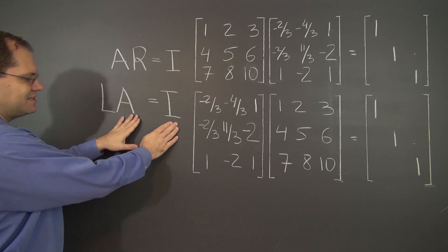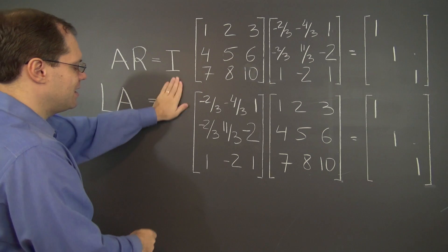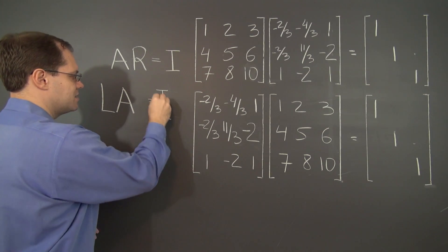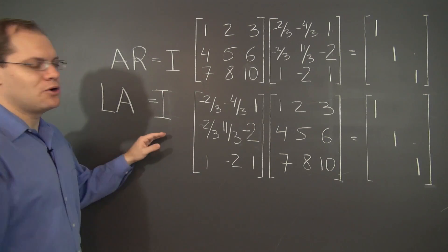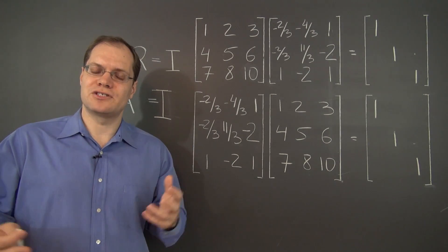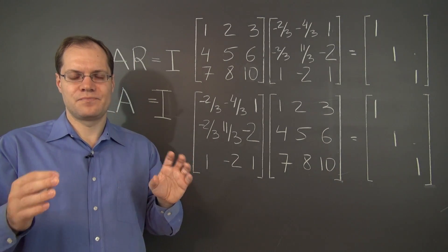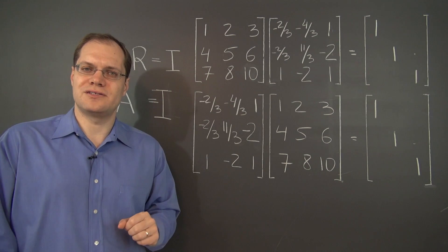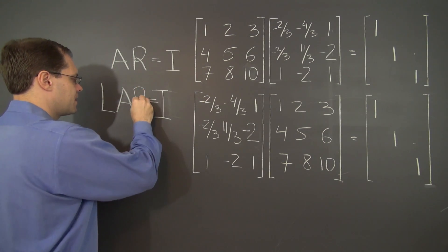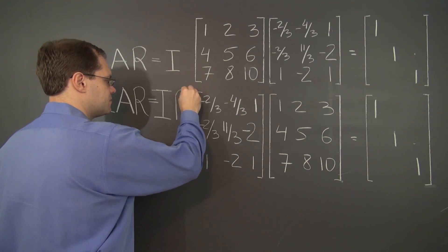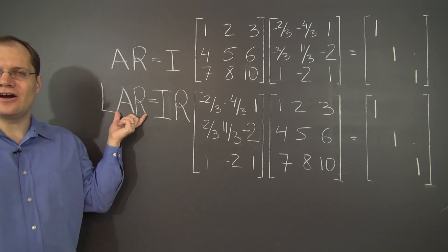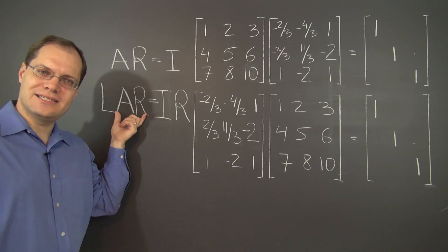So what I'm going to do is take this identity and multiply both sides. I'm just moving I to the left a little bit to give myself space and multiply both sides by R, a perfectly valid operation in matrix algebra. Take an identity, multiply both matrices by the same matrix on the consistent side. So LAR equals IR.